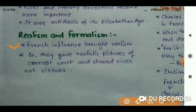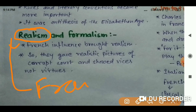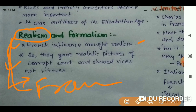Realism came from France, and French influence brought realism into English literature at that time. Realism is an important part of modern English writing as well. It started in the Age of Dryden — the Restoration period. Writers gave realistic pictures of the corrupt court and showed vices rather than virtues, which is also a quality of modern English literature.